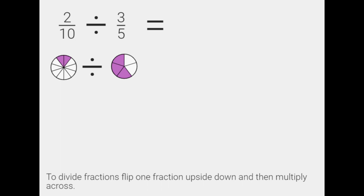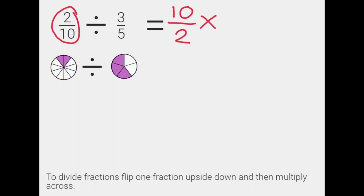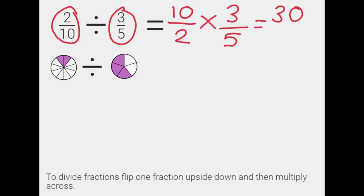Let's do another one. We're going to flip our two over ten upside down and rewrite it. So two over ten becomes ten over two. We're going to change our division sign to multiply and we're going to rewrite our other fraction as it was before — three over five. We're going to multiply straight across the top: ten times three gives us thirty, and two times five gives us ten. So our answer to our division problem is thirty over ten.